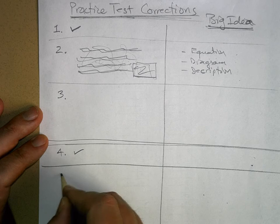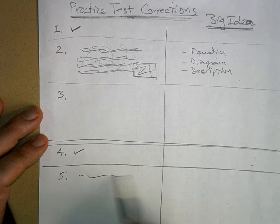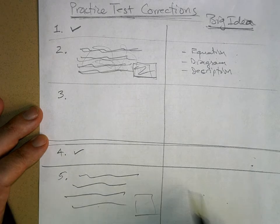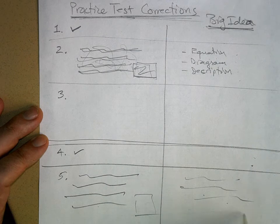And then number five, let's say you have to work it out and here's the correct answer. And then you write down any big ideas that you have, and this is what you're going to do for the whole test.